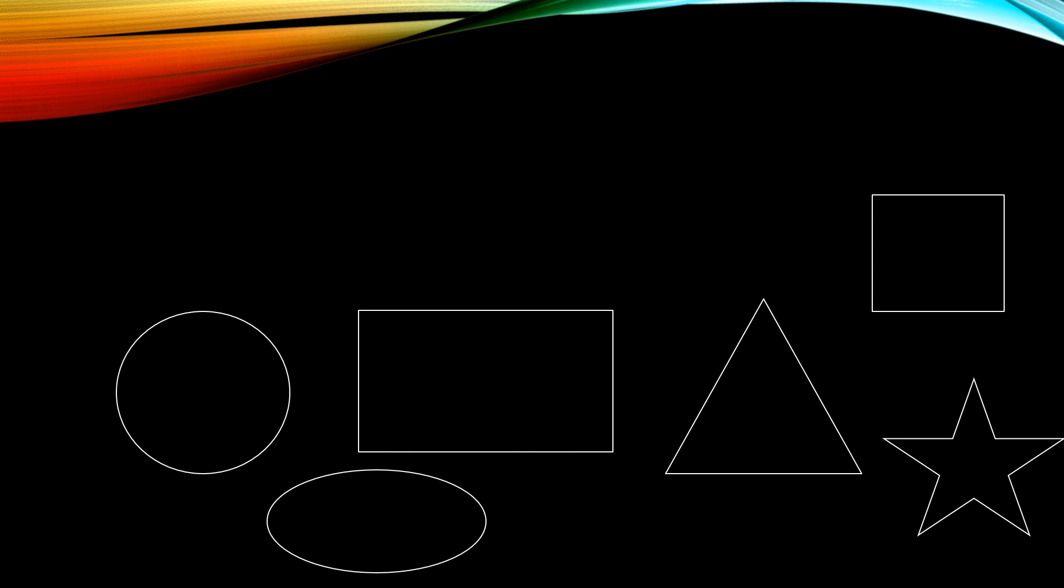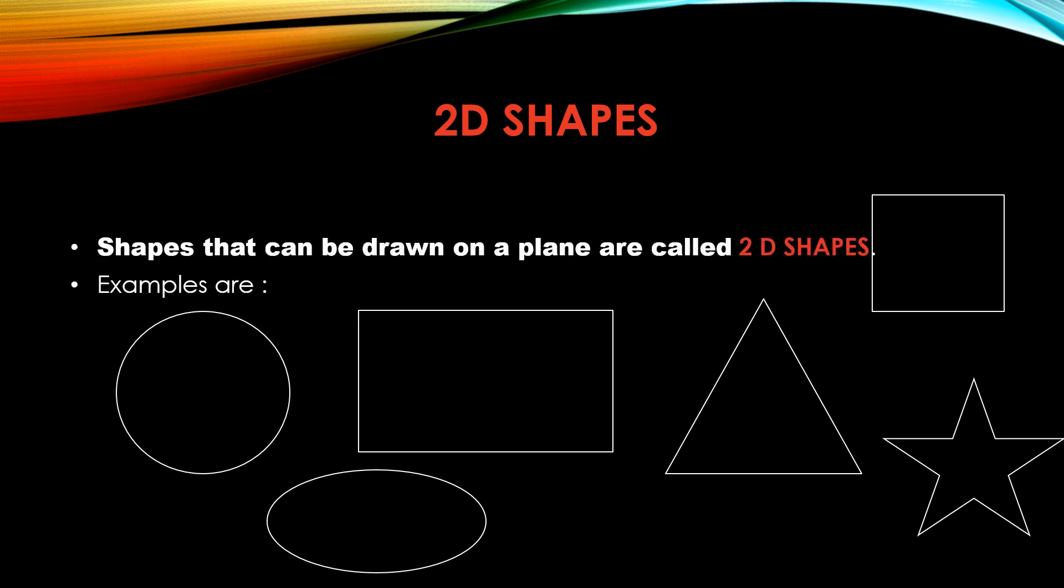First we will learn 2D shapes. 2D shapes are shapes which can be drawn on a plain surface. That means you can simply draw it on a paper using a pencil.